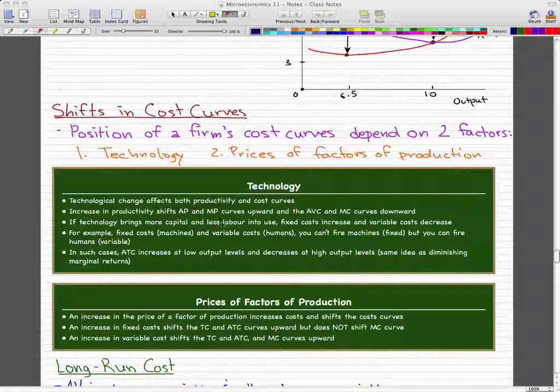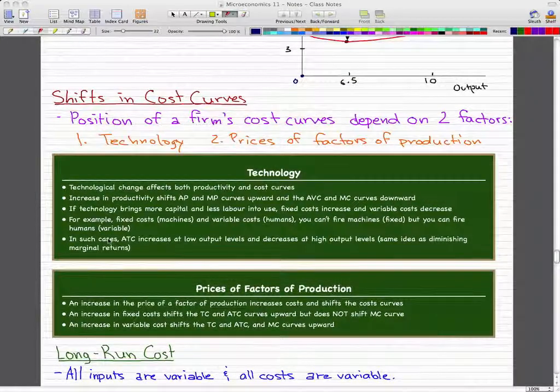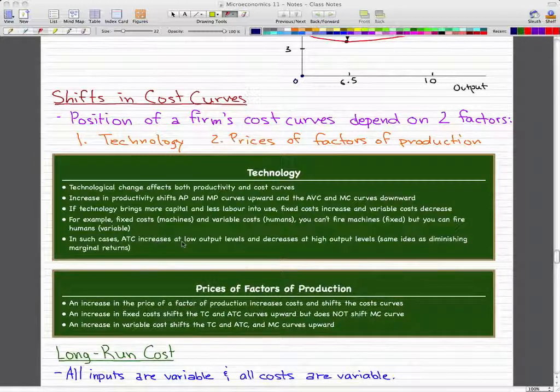If technology brings more capital and less labor into use, fixed costs increase and variable costs decrease, because we can add more people which increases cost, but we can't really fire a machine. In such cases, the average total cost curve increases at low output levels and decreases at high output levels.